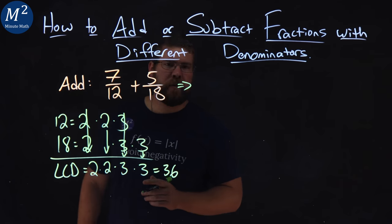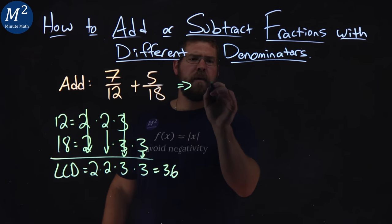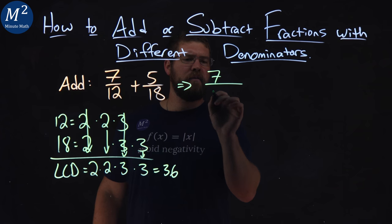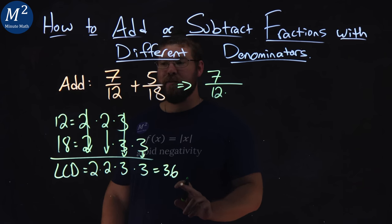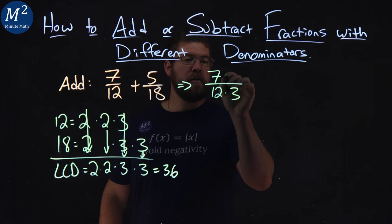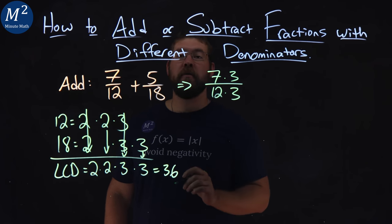So, let's write each one of these fractions with that least common denominator. Let's start with the 7 twelfths. To have 12 become 36, we need to multiply that by 3. So, we need to do that also to the numerator.